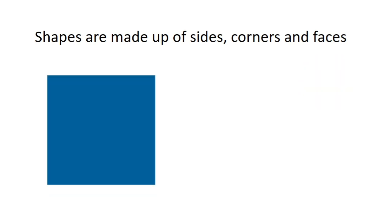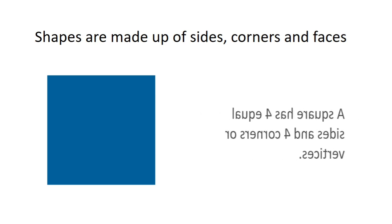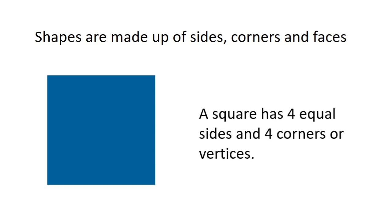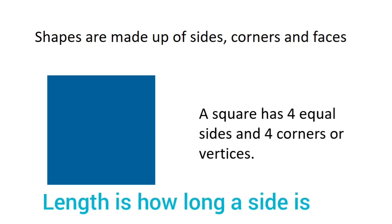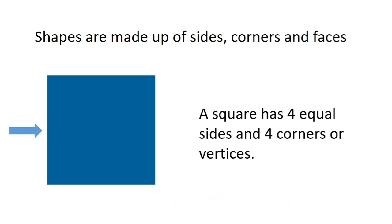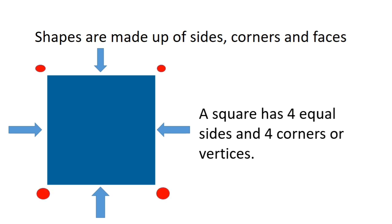Let's have a look at this square. The square has four equal sides — that means that every side is the same length — and it has four corners, or we can also call them vertices. Let's count: one, two, three, four sides, and your four corners: one, two, three and four.